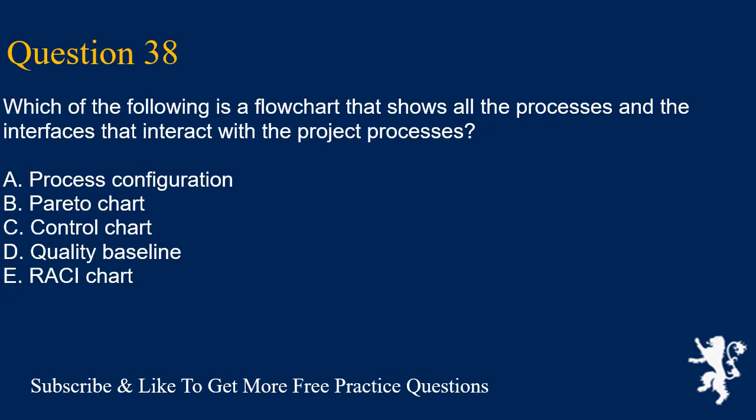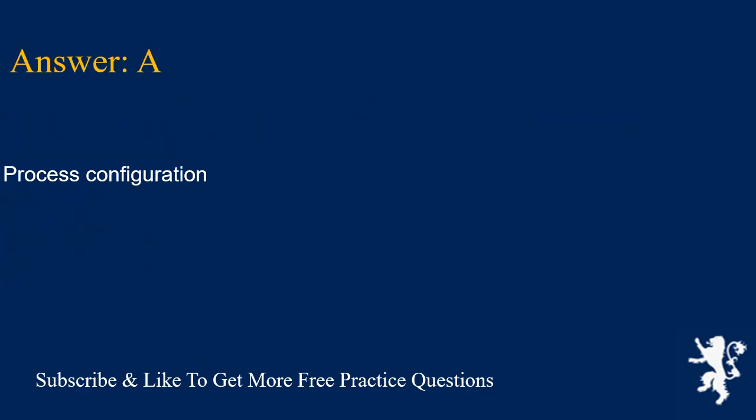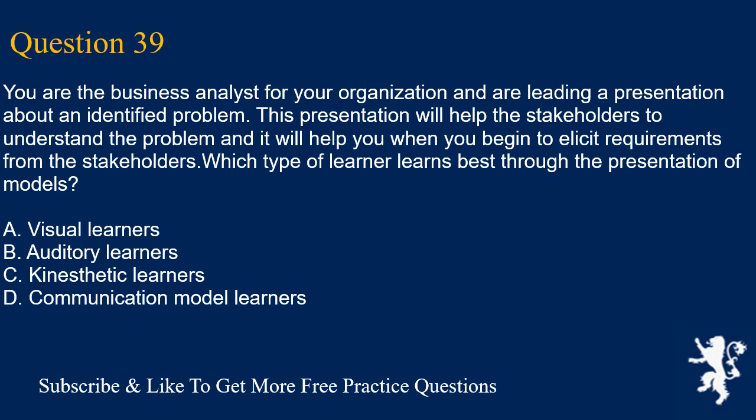Question 38: Which of the following is a flowchart that shows all the processes and the interfaces that interact with the project processes? A. Process configuration. B. Pareto chart. C. Control chart. D. Quality baseline. E. Raji chart. Answer is A. Process configuration.